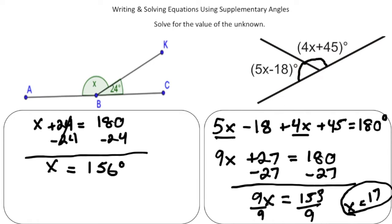There you go. Now it's always good to check your work. So if I plug in 17, so 5 times 17 minus 18, and then 4 times 17 plus 45, it should always add up to 180 degrees.